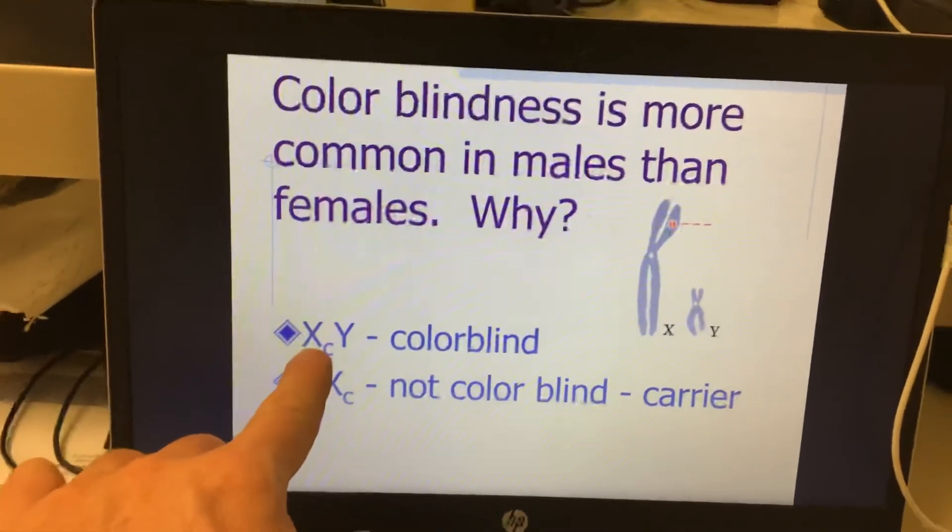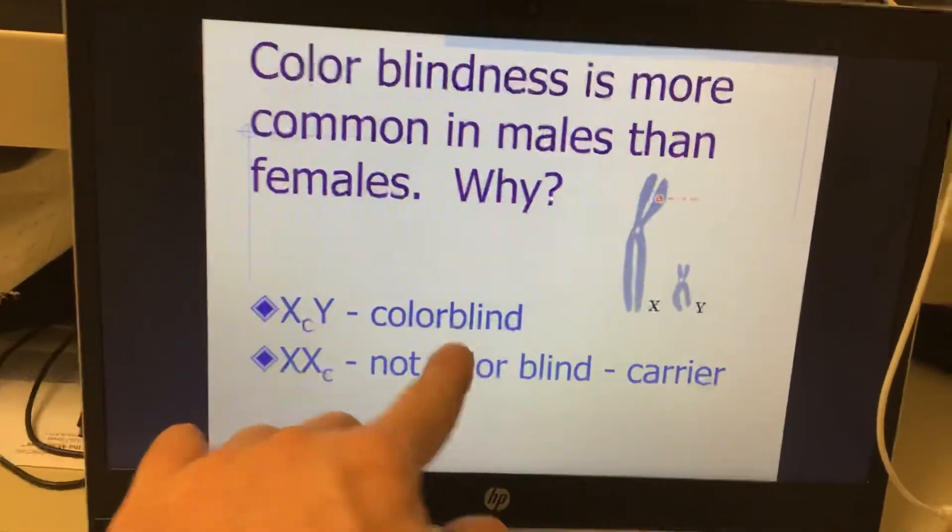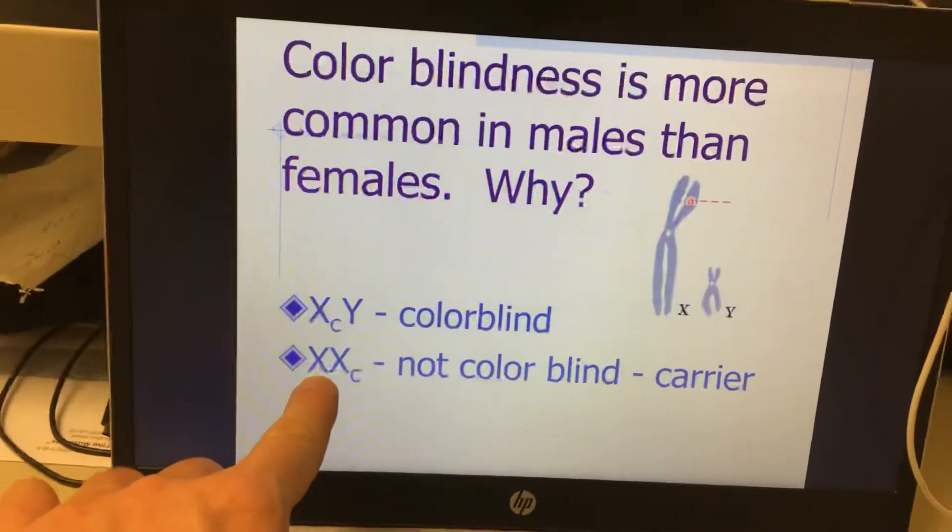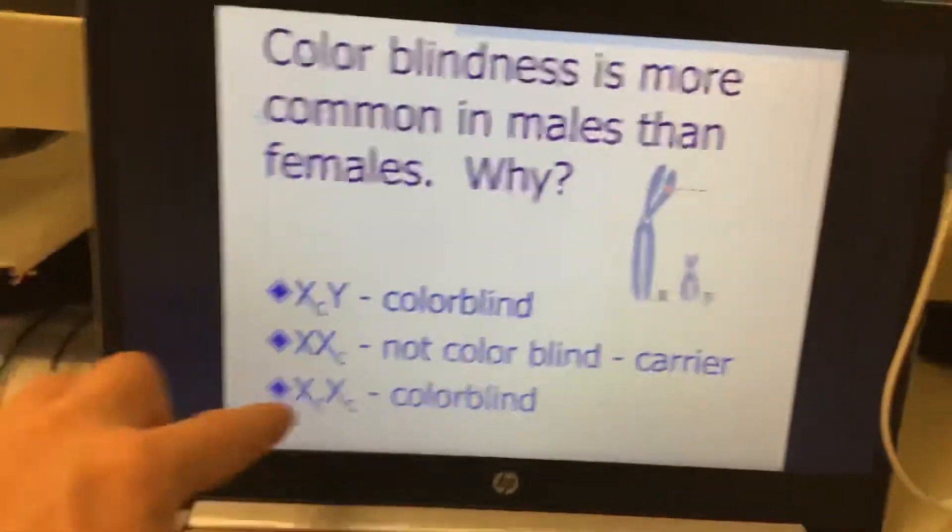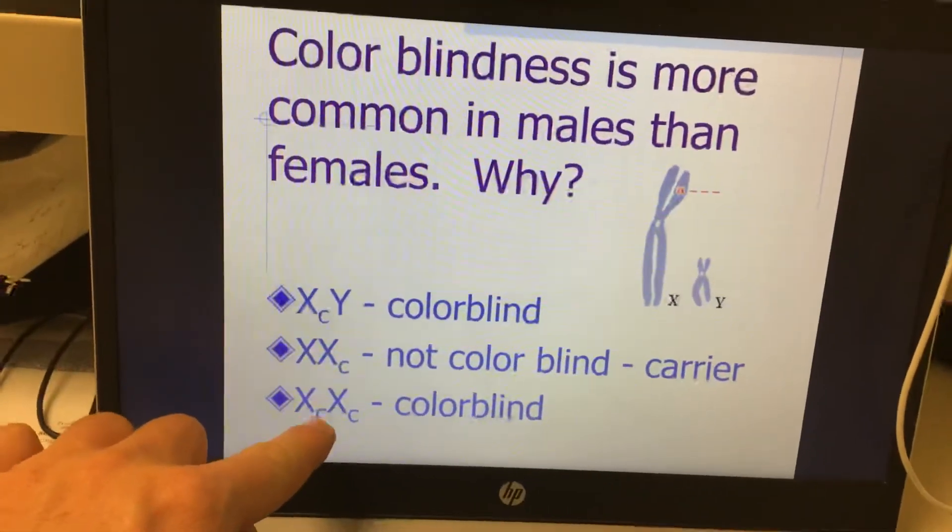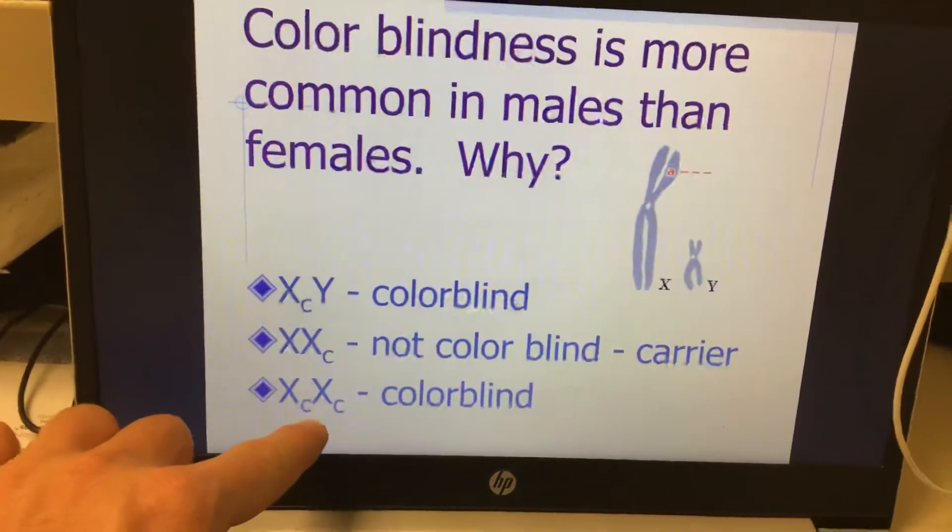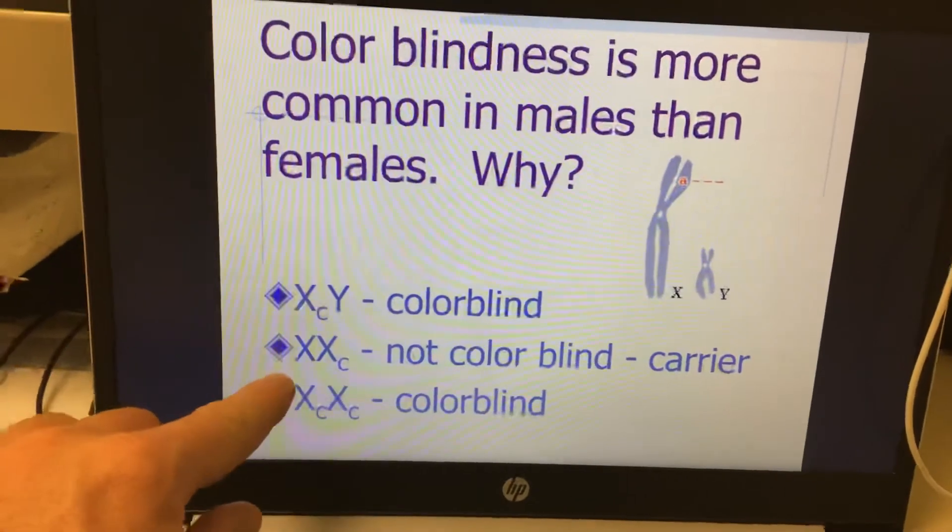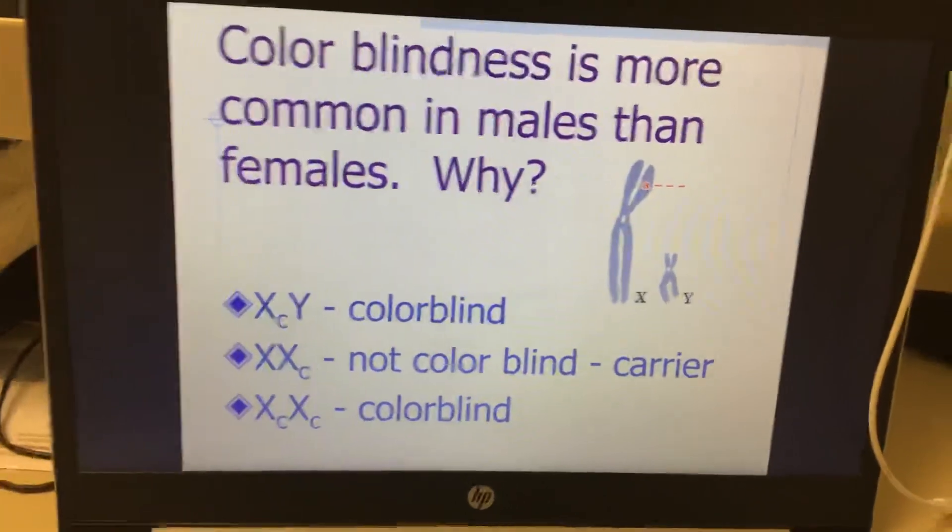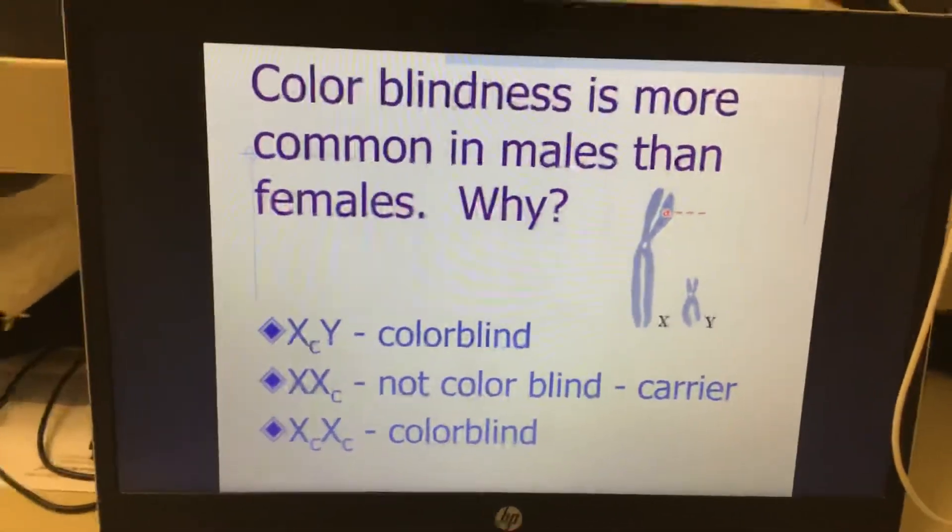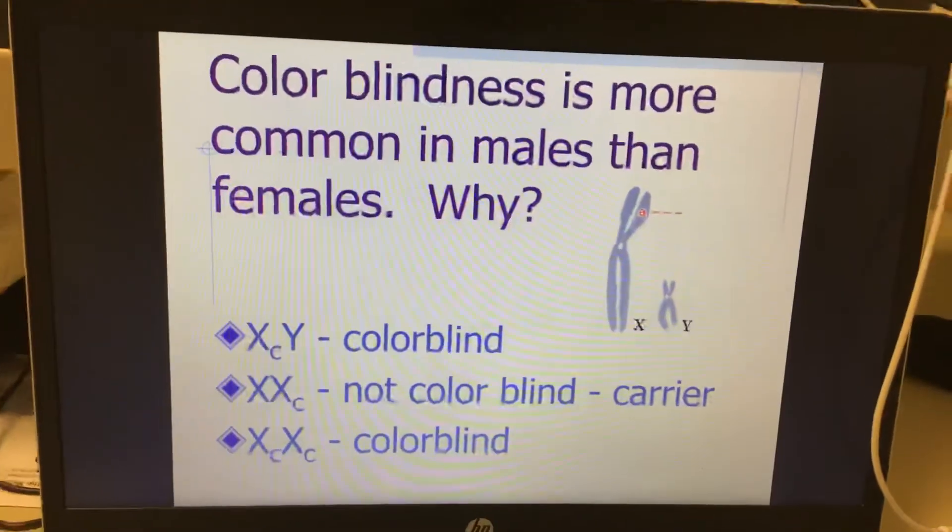Here, in the male, it has a colorblind X, but it doesn't have a healthy one to cover it up. So the male is going to be colorblind. This female will not. It'll just be a carrier because it has a healthy X that's showing. The only way a female can be colorblind is if both X's contain the colorblind gene. Colorblind male, carrier female, colorblind female. A female has to have two colorblind genes, and a male just has to have one.